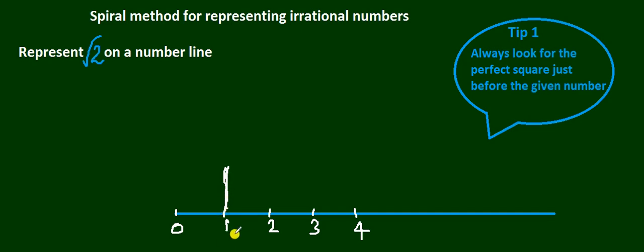Now the rule is: wherever you are starting, the perpendicular drawn is always of 1 unit only. Don't get confused. Don't think if I start at 3 it should be 3 units. It's not like that. Wherever you are starting, the perpendicular should always be 1 unit.